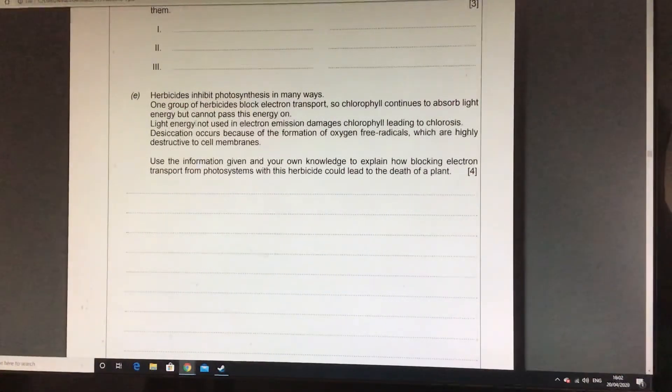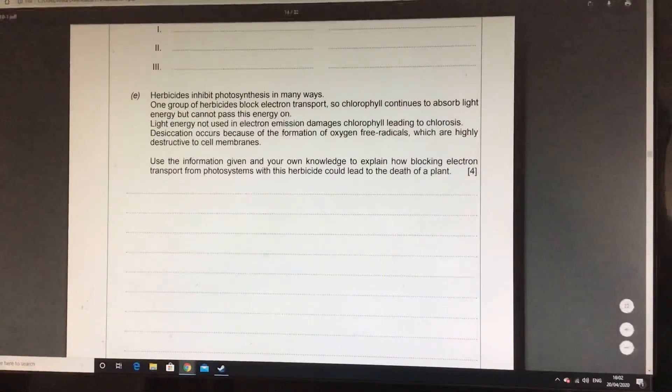which means that this is now lacking for the light independent stage. Therefore, the triose phosphates and sugars cannot be formed. Because you have got a lack of ATP and NADPH, you've got that lack of triose phosphates. And therefore, no energy for respiration for the plants and the whole plant will die.